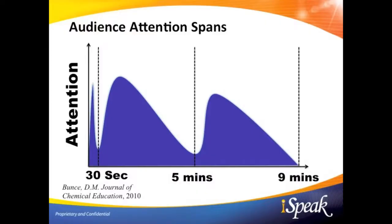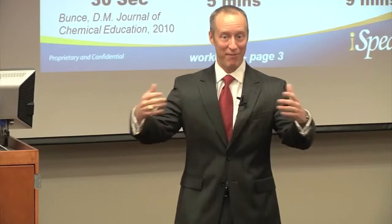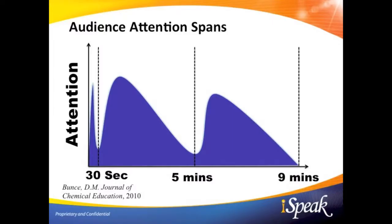They did this over and over, collected all this data, and then mapped it all. Here's what they found: students were zoning out within 30 seconds of the professor beginning the lecture. They recognized that they were zoning out and popped right back in, and then the next huge dip occurred right around the five-minute mark.